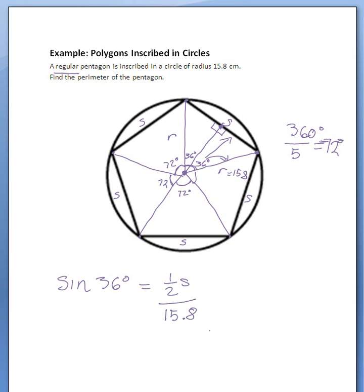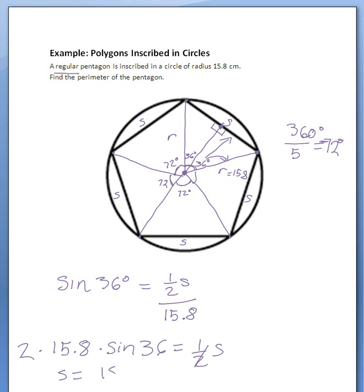And that gives me information I can use to solve for S. Multiply both sides by 15.8, and I have 15.8 times the sine of 36 equals one-half S. Multiply both sides by 2: so 2 times 15.8 times sine of 36 equals S, and that gives us S approximately equals 18.6, rounding to 1 decimal place.